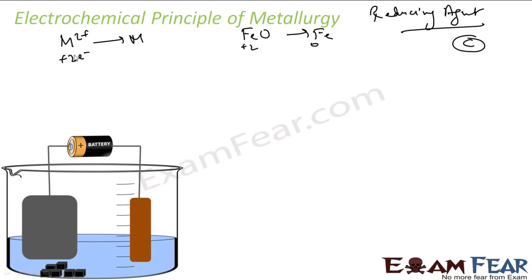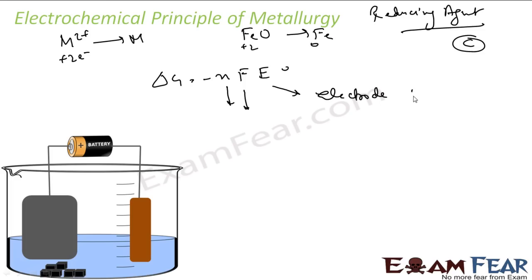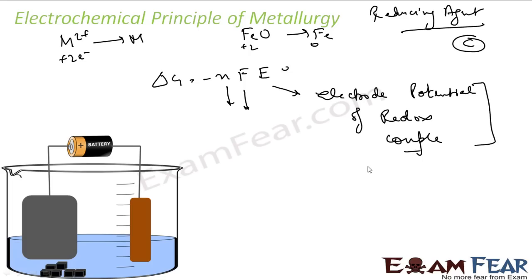By electrolysis we can do this reduction. Faraday's law states ΔG = −nFE°, where n is the number of electrons required — for example, two electrons to reduce Fe²⁺ — F is the Faraday constant, and E° is the electrode potential of the redox couple. So ΔG can also be supplied using electrical discharge, and by adding electrons you can reduce metal oxides to metal form.